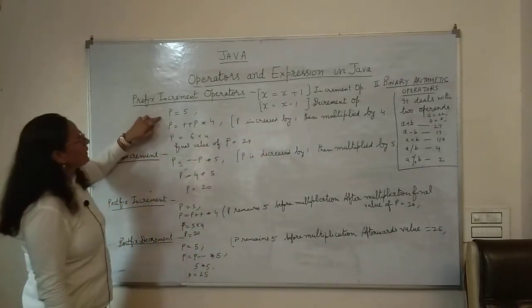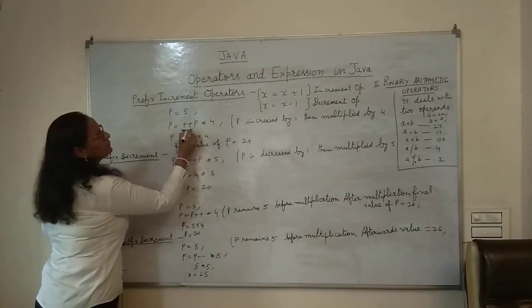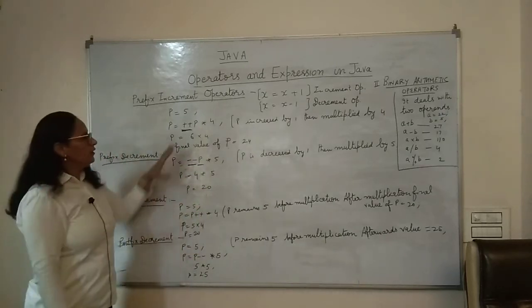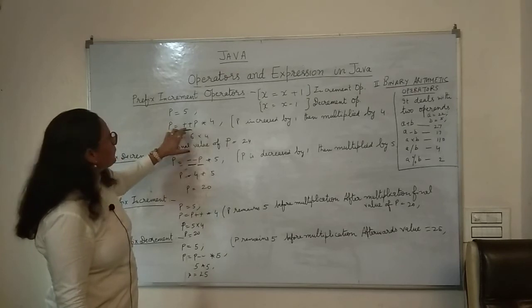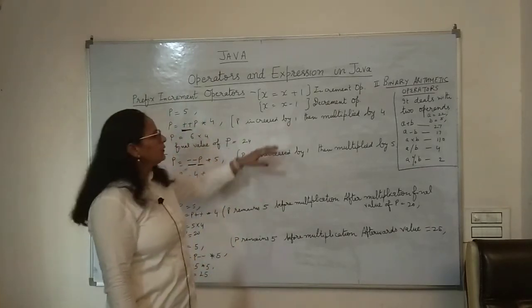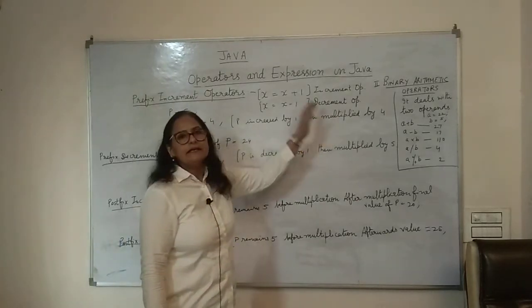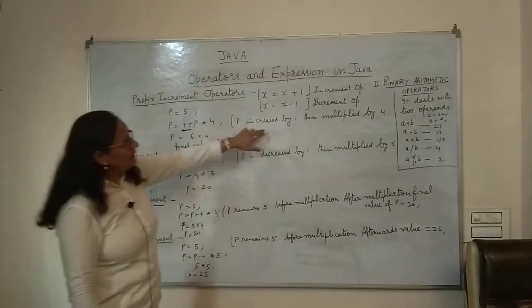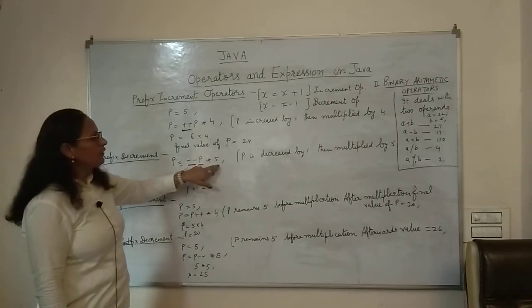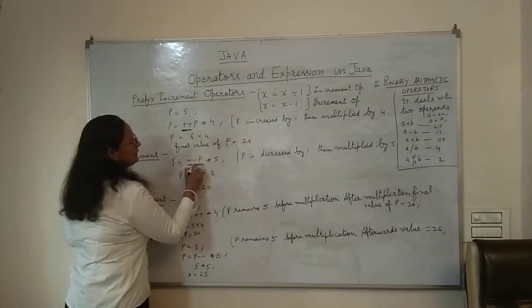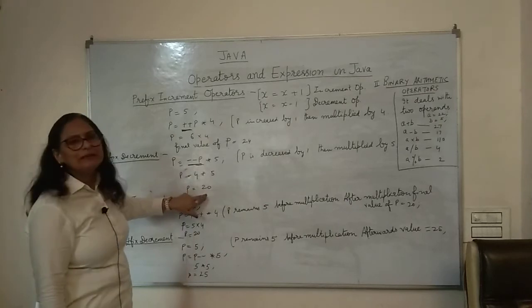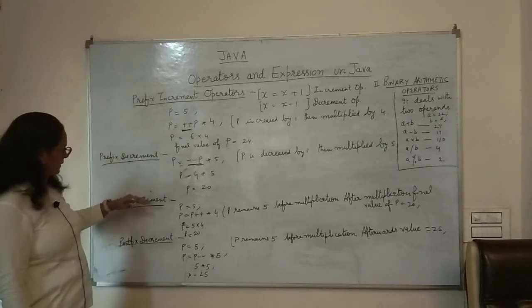To summarize prefix operators: when the variable is prefixed with ++, the value is increased by 1 before any other operation. So ++P * 4 gives 24. With --P * 5, P's value is first decreased by 1 to become 4, then multiplied by 5 to give 20.